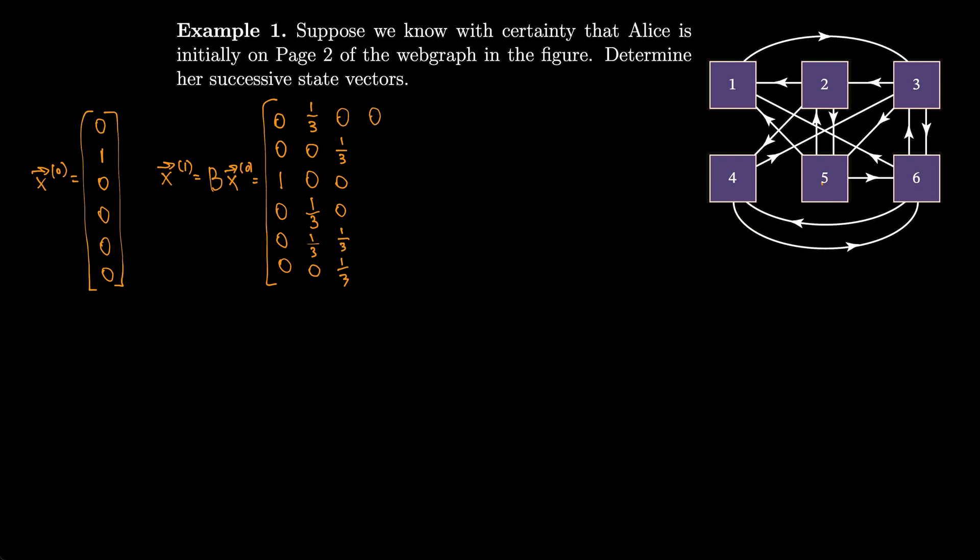And we can keep filling in the matrix in this fashion. The fourth column we get 0, 0, half, 0, 0, half. Then one-third, one-third, one-third, 0, 0, 0. And then one-third, 0, one-third, one-third, 0, 0.